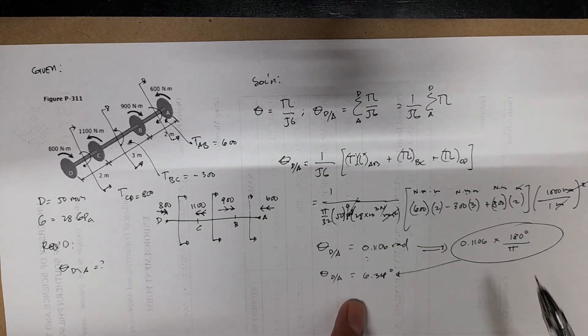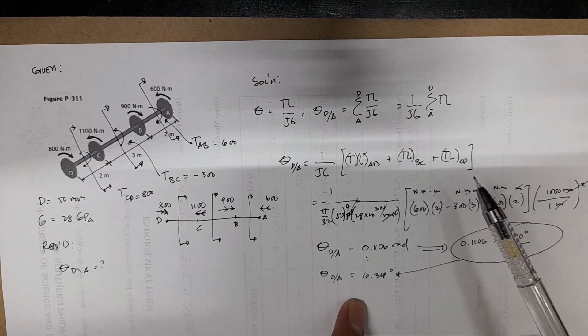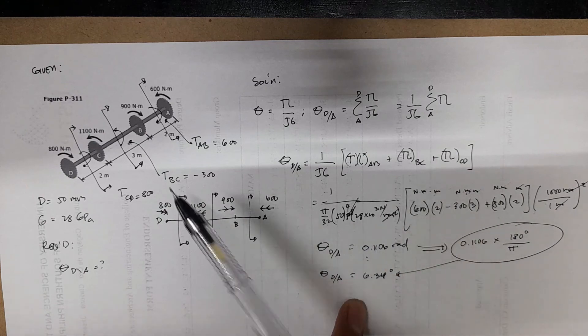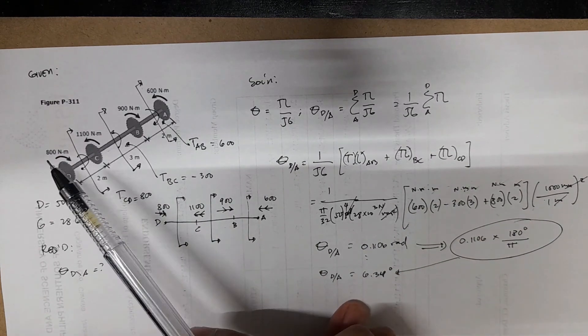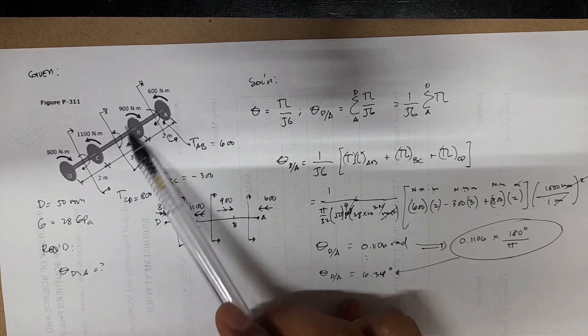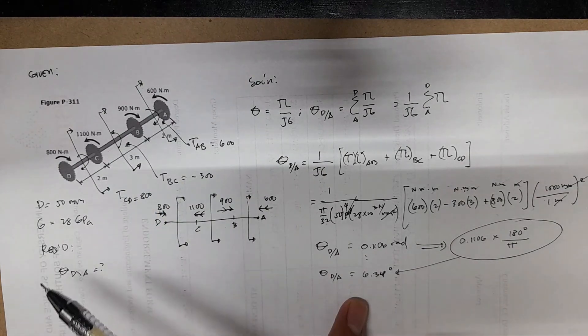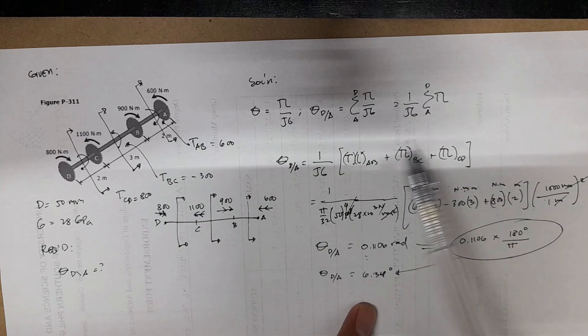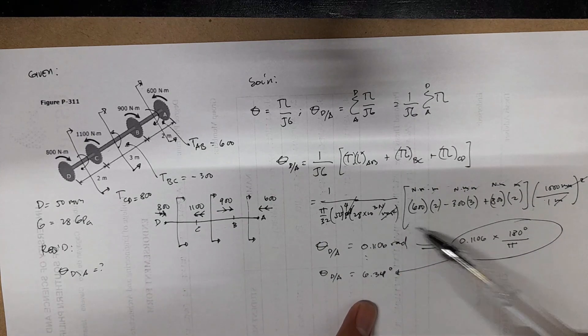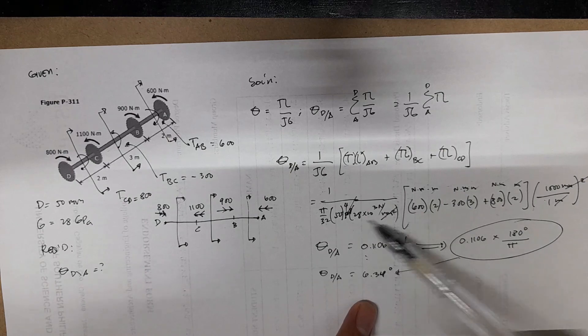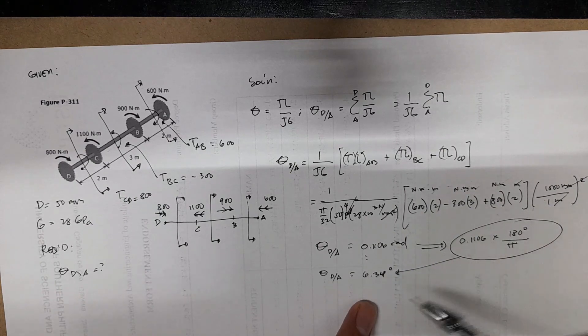So that's it, that's how you get the angle of twist from a specific point relative to other points along the length of the shaft. So just a summation, and that's it. So just try to evaluate this and check if these answers are correct, just to confirm the numbers.